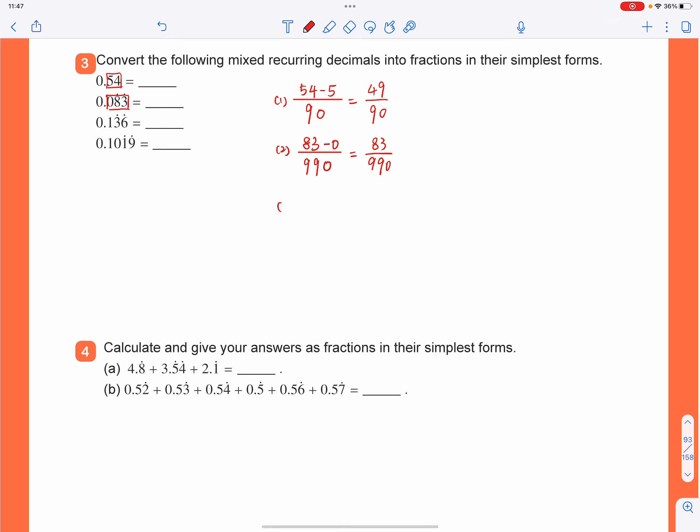And then next one, using the same method. When you count how many recurring digits you have after the decimal point, you will have 2 digits, 3 and 6. So that means we're going to have 2 of 9s and then 1 of 0. Why do we have 1 of 0? Because for the non-recurring digit after the decimal point, you have 1 there, so that's why we'll have 1 of 0.